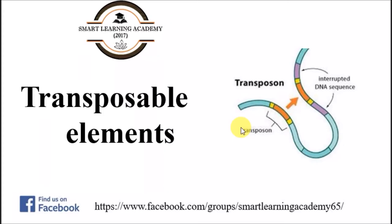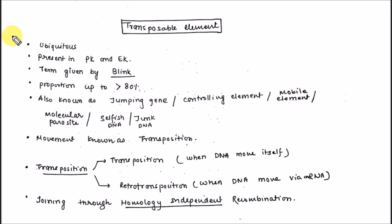In this video tutorial I am going to discuss about transposable elements. When you divide the term 'transposable elements' — that is 'trans' and 'posable' — or you can say transposons: 'trans' plus 'posons'. Trans means transacting and 'posons' means change in position, so it clearly represents changing position.